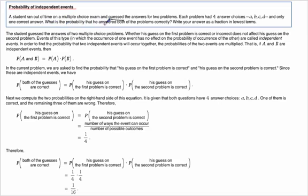What's the probability that he answered both of the problems correctly? So he's guessing on both. The student guessed on two multiple choice. Whether his guess on the first problem is correct or incorrect does not affect his guess on the second. That's what makes them independent.